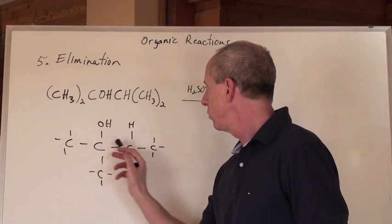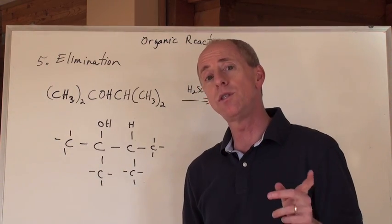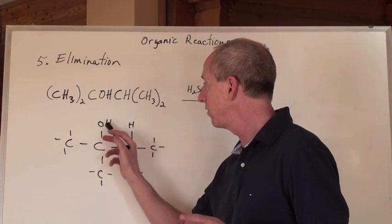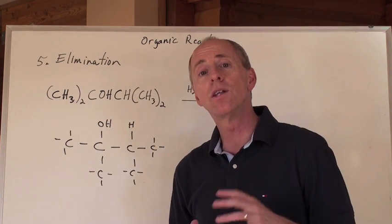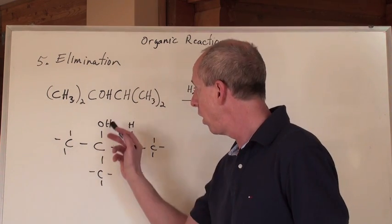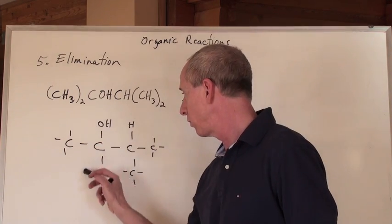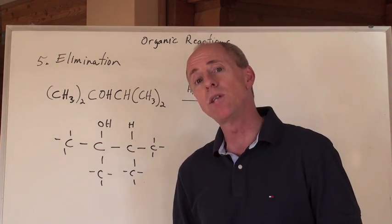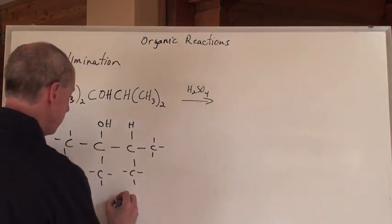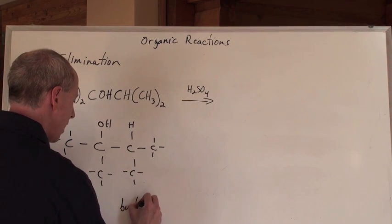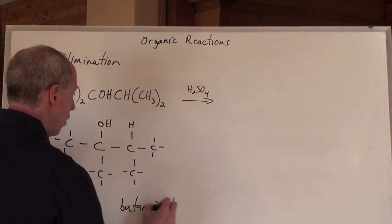Okay, longest continuous chain of carbons. One, two, three, four. So that's a butane. But this is not butane because there's an OH group on it. So it's a butanol. But where's the ol? At the second carbon in. So because that has precedence over the branches, that's going to be a butan-2-ol.